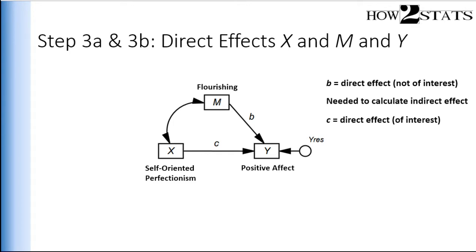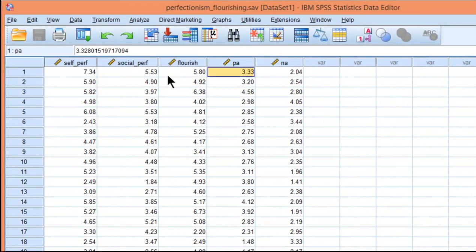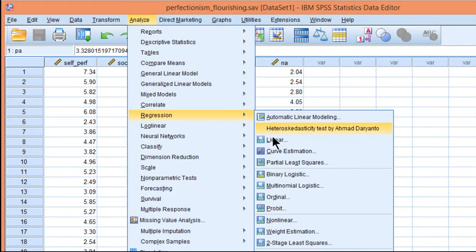Steps 3a and 3b: I conduct a multiple regression with self-oriented perfectionism and flourishing as independent variables and positive affect as the dependent variable. This estimates both b and c. Note that b is a direct effect needed only to estimate the indirect effect, whereas c is the direct effect of primary interest. If c is statistically significant, it supports a direct effect of self-oriented perfectionism on positive affect.